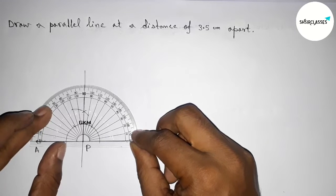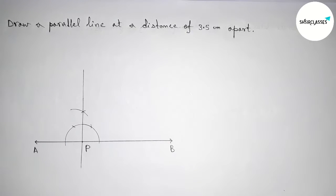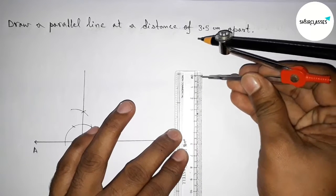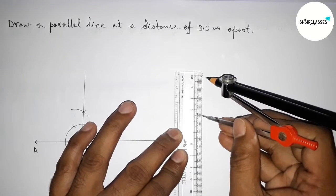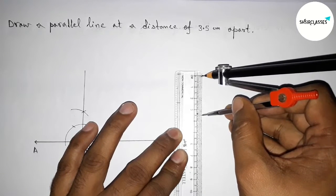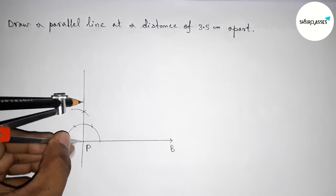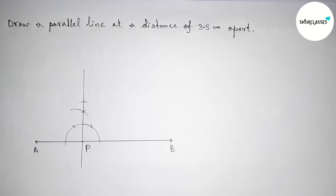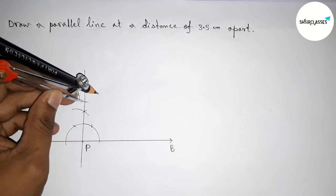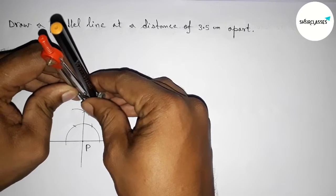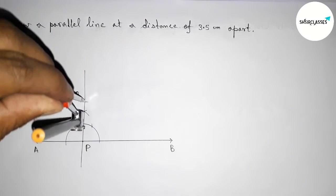This is confirmed as a 90-degree angle. Now we have to take 3.5 centimeters length with the help of a scale and compass — that is 1, 2, 3, and 3.5 centimeters. Putting the compass on point P and cutting here, we mark point Q. So PQ equals 3.5 centimeters.